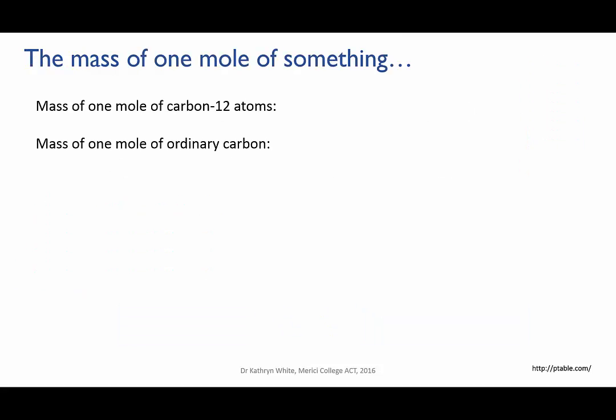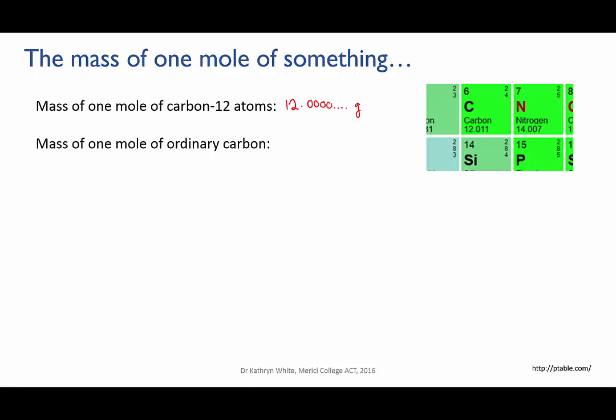So the molar mass of carbon is the mass of one mole of carbon atoms. If you have one mole of pure carbon-12 isotope, that's 12.0000 grams. Remember that's how we defined the mole in the first place. But if you have ordinary carbon, which is a mixture of mostly carbon-12 with a bit of carbon-13 and carbon-14 mixed in, the mass of one mole will be slightly heavier because a small proportion of the atoms are of those heavier isotopes. It will weigh 12.011 grams.